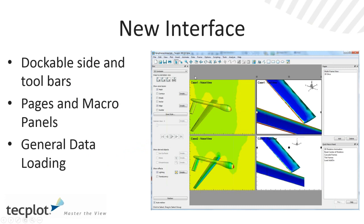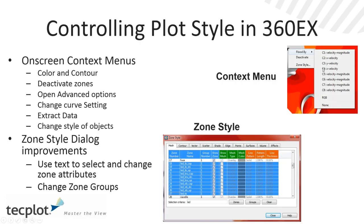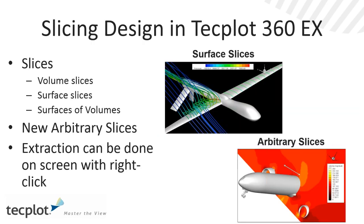The interface has been updated, now using Qt technology. What you get is the ability to have dockable sidebars and dockable menus. We have plans to make it more customizable in the next couple of releases, but it's not fully customizable yet. We've also moved towards a more context-based style implementation — if you need to change style on an object, you can do that with a right-click. This allows you to very quickly get to advanced options, change curve settings, extract data, and we'll go through this in detail in the first part of the demonstration. Slicing has been updated as well — we now have arbitrary slicing and you can do an extraction right on screen with a single click.